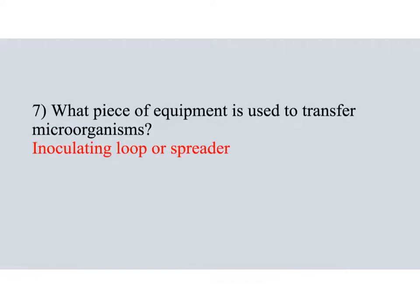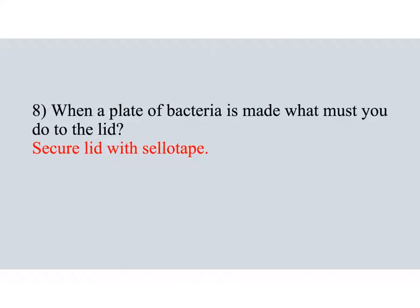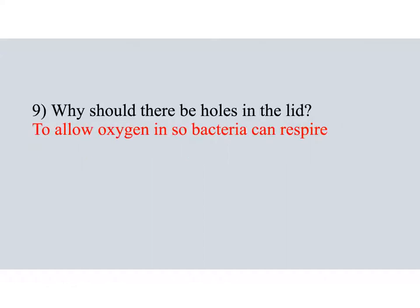Question seven: To transfer microorganisms from one piece of equipment to another, you would use what we call an inoculating loop, or you could say a spreader. Question eight: You'd secure the lid with sellotape or tape. Question nine: There should be holes in the lid to allow oxygen in so the bacteria can respire.